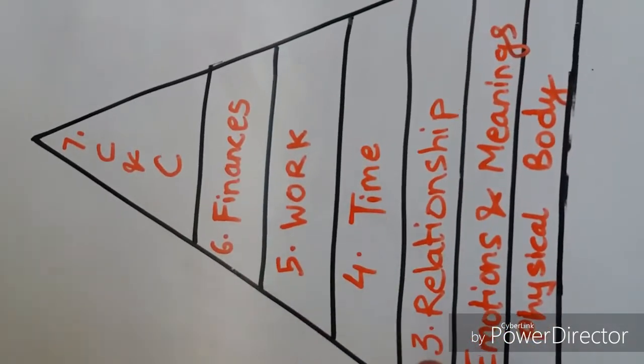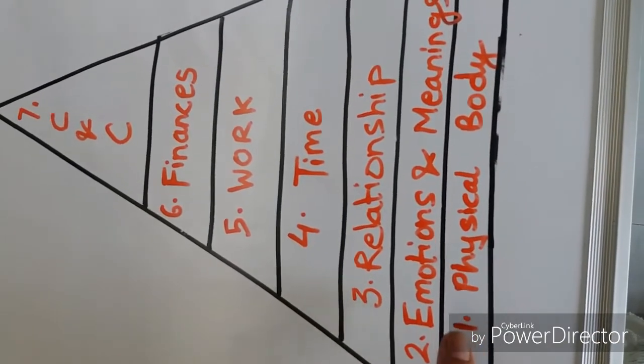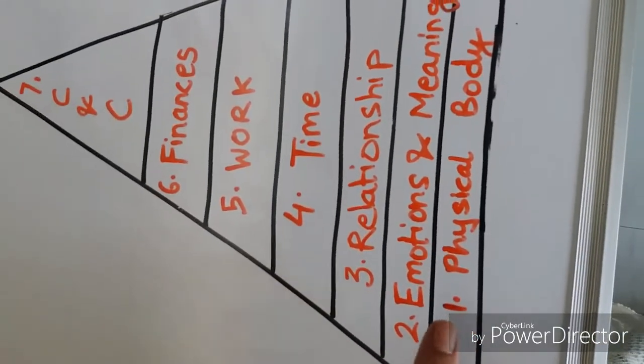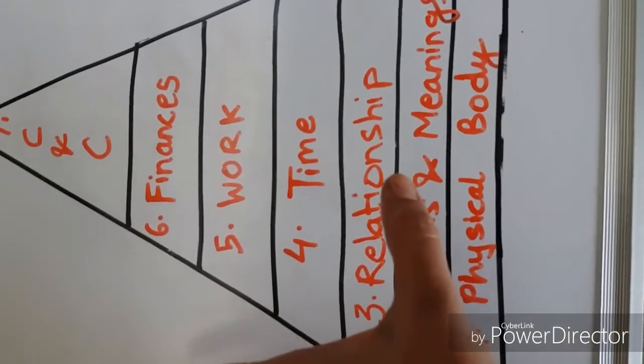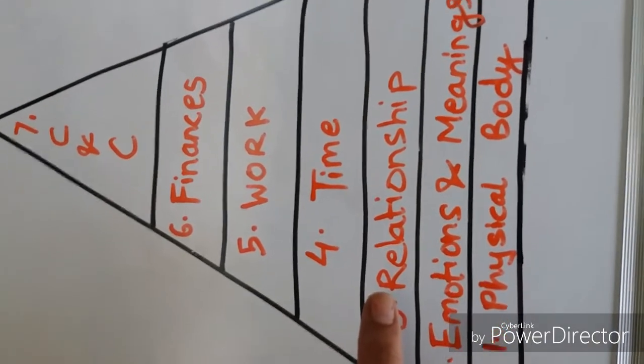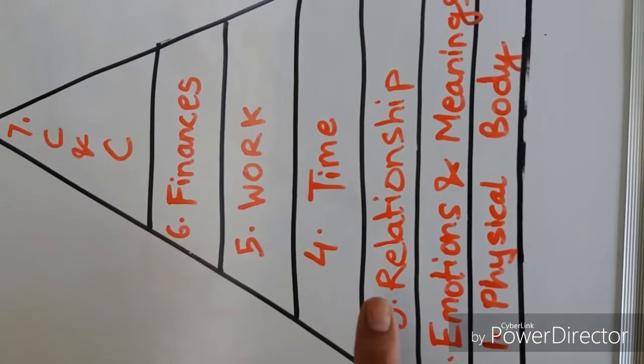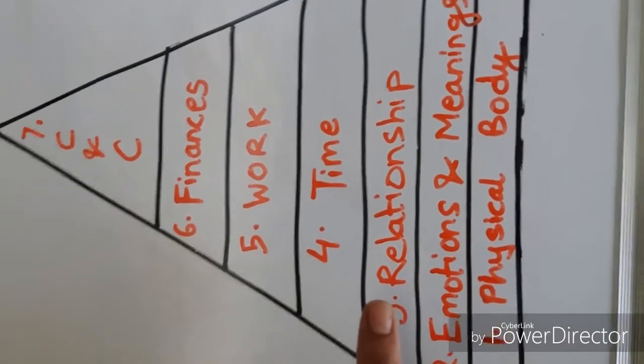Every bit of it is interlinked. Look if your physical body is strong then and then only you can do other tasks. If your head is spinning you cannot do meditation. Similarly if your emotions and meanings are not good then your relationship will never be good or you can never be a good partner or a good friend or things like that.